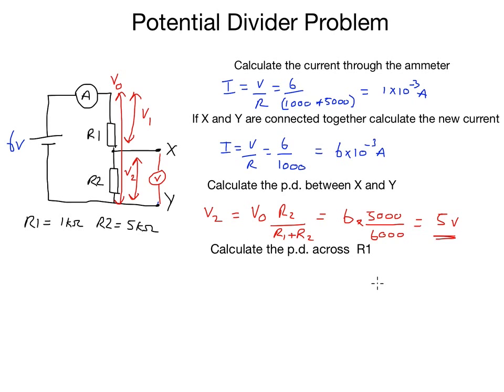Finally, calculate the PD across R1. We could use another variant of this equation where we had V1 instead of V2, but the easiest way is not to bother. We know that V2 is now 5 volts and we're supplied 6, so there must be 6 minus 5 equals 1 volt across R1.